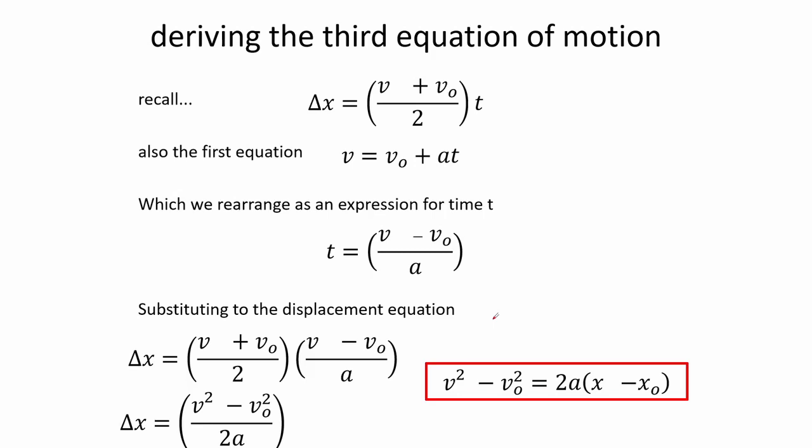We begin with the displacement function with average velocity and the first equation of motion formula. Rearranging the first equation of motion as an expression for time t and substituting it to the displacement formula would yield the third equation of motion.